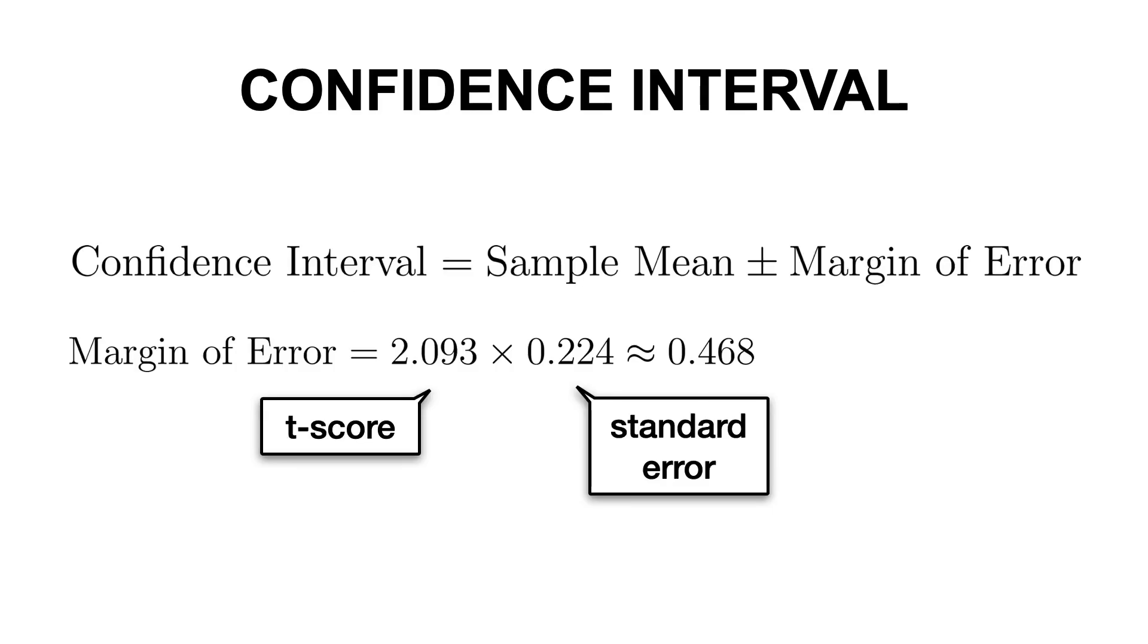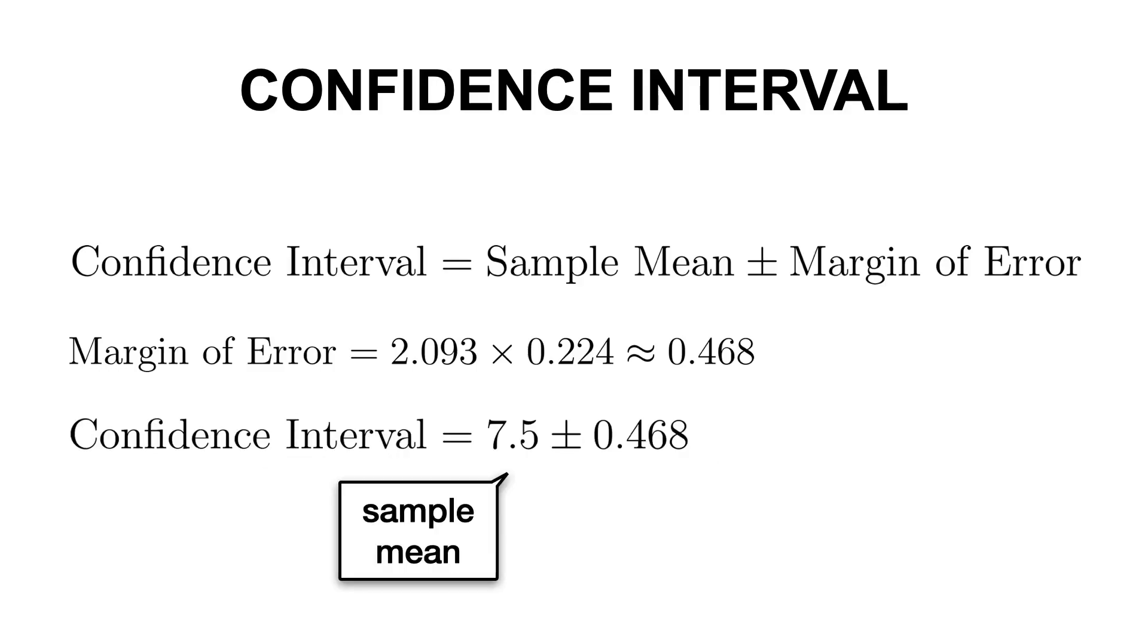So the margin of error is equal to 0.224 multiplied by 2.093, which is equal to 0.468. So our confidence interval will be equal to the mean plus minus this value.